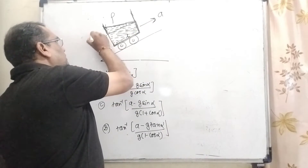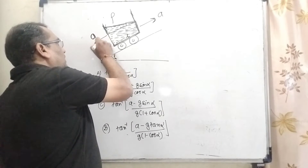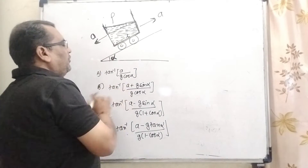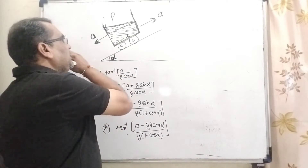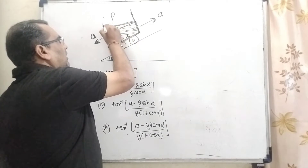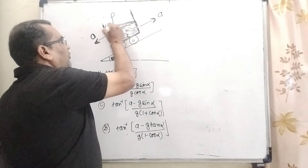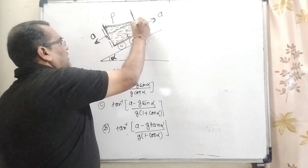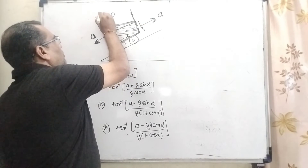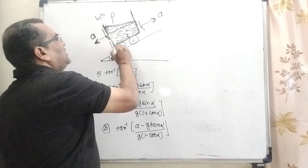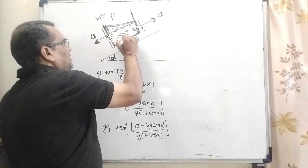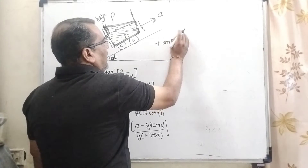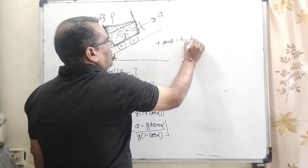So here acceleration A is acting upward along the incline, and pseudo acceleration is acting in the backward direction. We have to find tan theta. The fluid level becomes tilted, and if we consider heights h2 and h1, then the height difference is h2 minus h1, and the base length is considered L. So tan theta equals (h2 minus h1) upon L — this is our target.